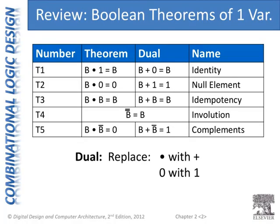As a review, here are the Boolean theorems of one variable that we talked about last time. We have identity — a variable in an AND relationship with one, we just get that variable back. That's the definition of identity: we put it in an operation and get itself back. Or the dual: replace the ANDs with ORs, ones with zeros — a variable in an OR relationship with zero, we just get that variable back.